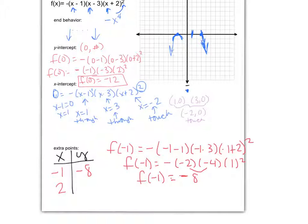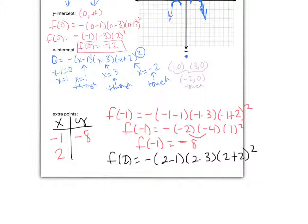Cool. Now let's plug in a positive 2. So f of 2 here is going to end up being a negative 2 minus 1, 2 minus 3, and 2 plus 2 squared. I'm going to scoot my chart up a little bit here so we can see what's going on. And I now have f of 2 is now equal to a negative 1 times negative 1 times 4 squared, which is 16.